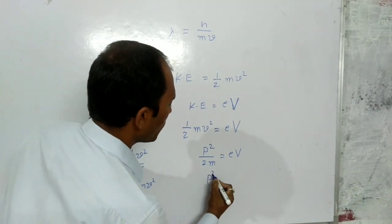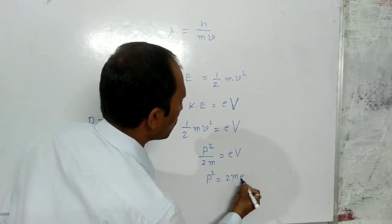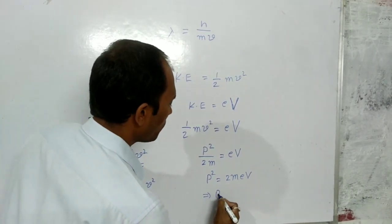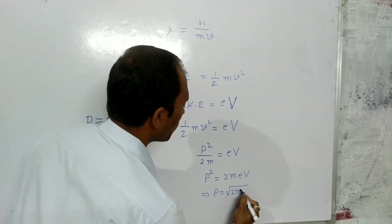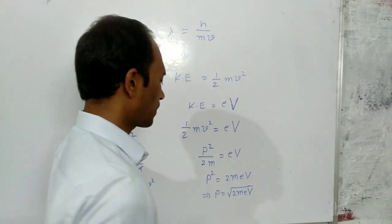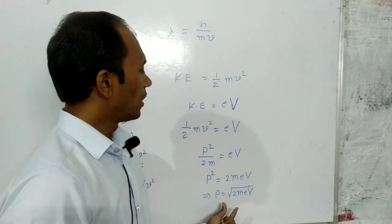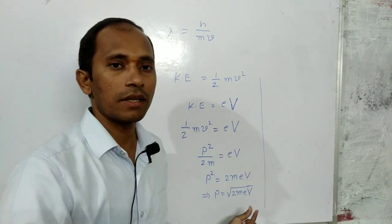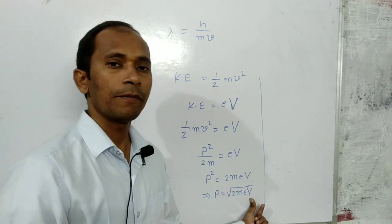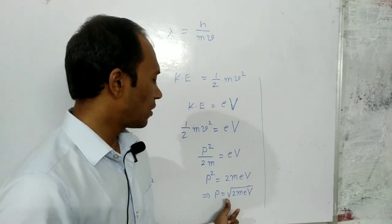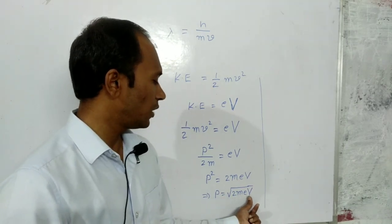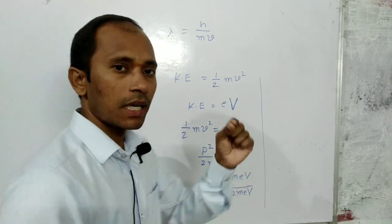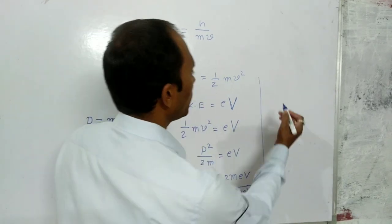From p² by 2m equals eV, we get p² equals 2m into e into V. Therefore, the momentum p equals the square root of 2meV. This is the expression for the momentum of an electron moving inside a potential V, where m is the mass of the electron. The De Broglie wavelength of the electron can then be found using this momentum.